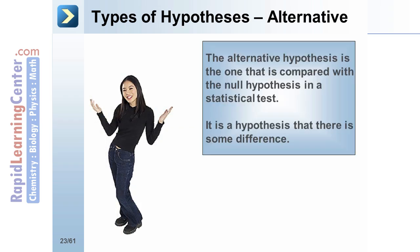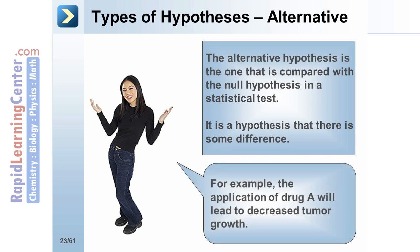The alternative hypothesis is the one that is compared with the null hypothesis in a statistical test. It is a hypothesis that there is some difference. For example, the application of drug A will lead to decreased tumor growth.